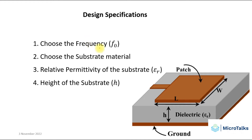Before going for a microstrip patch antenna design, we have a set of prerequisites. The first one is to choose the frequency F. Whenever we design an antenna, we need to have a frequency — for example, for Bluetooth application, we know the ISM band is 2.4 GHz, so F equals 2.4 GHz. For 5 GHz bandwidth, F equals 5 GHz. I am going to design an antenna for 5 GHz since Wi-Fi also works on this frequency.